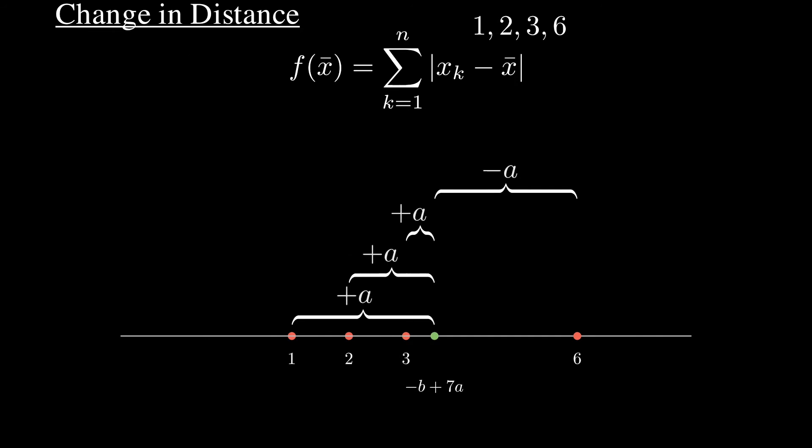adding a means moving away from three numbers and moving towards one number. This corresponds to a net gain of plus 2a. This isn't what we want, because it means our distance is increasing again. We can therefore tell that our minimized distance occurs between the intervals 2 to 3.